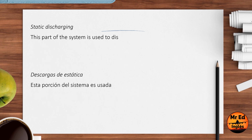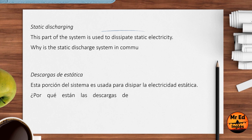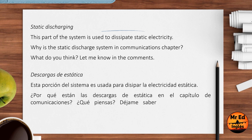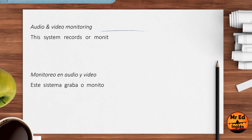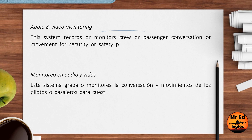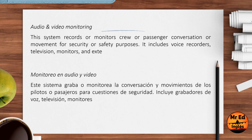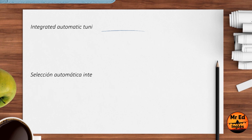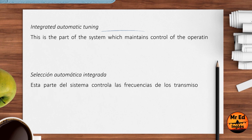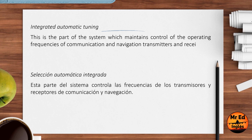Static Discharging: this part of the system is used to dissipate static electricity. Why is the static discharge system in the communications chapter? What do you think? Let me know in the comments. Audio and Video Monitoring: this system records or monitors crew or passenger conversation or movement for security or safety purposes. It includes voice recorders, television monitors, and externally mounted cameras. Integrated Automatic Tuning: this is the part of the system which maintains control of the operating frequencies of communication and navigation transmitters and receivers.